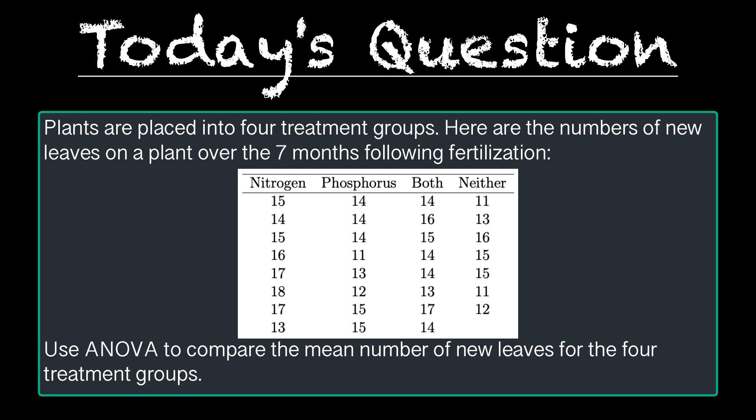The question we're working on today is, plants are placed into four treatment groups. Here are the numbers of new leaves on a plant over the seven months following fertilization.